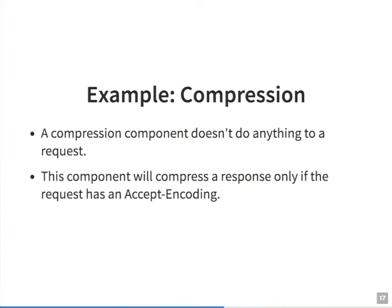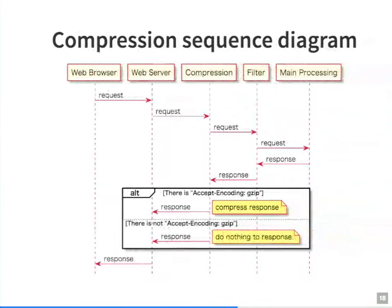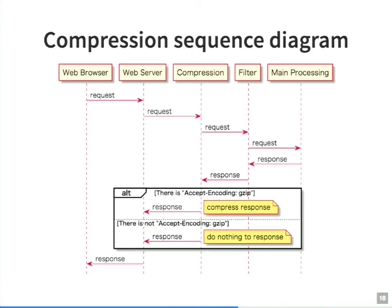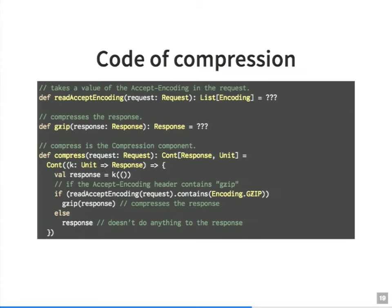Next, we write the compression component with continuation monads. The compression component does not modify the request. It will compress a response only if the request has an Accept-Encoding header. The compression component can be expressed in this sequence diagram: the component does not touch the request; if there is an Accept-Encoding header, the component compresses the response; otherwise, it doesn't compress it. When we write this component in Scala in the same way, it looks like this.